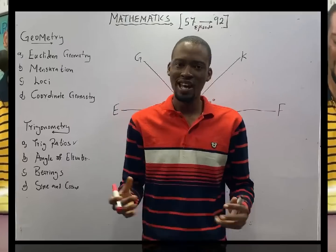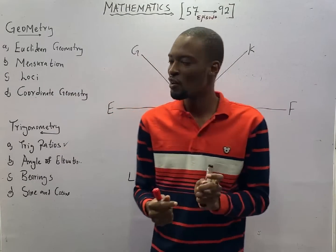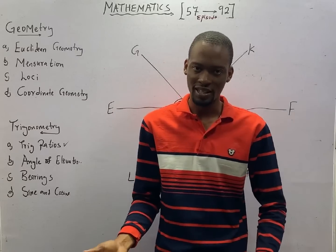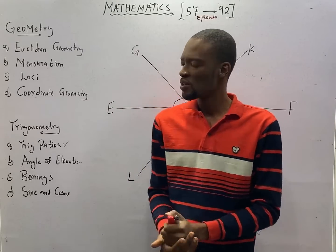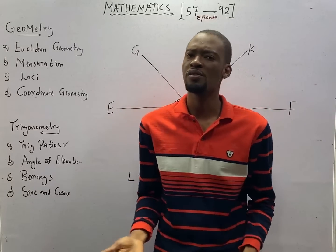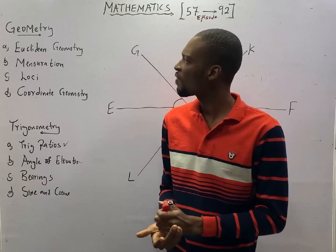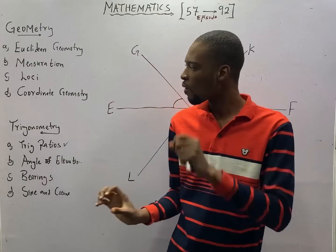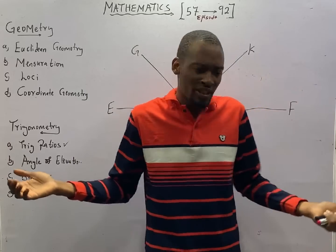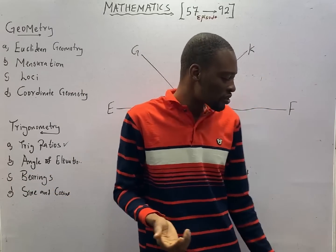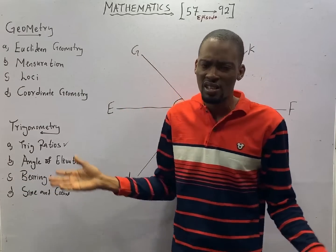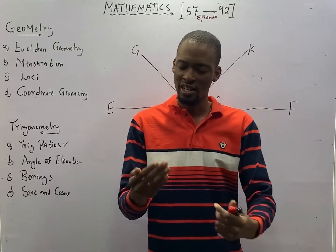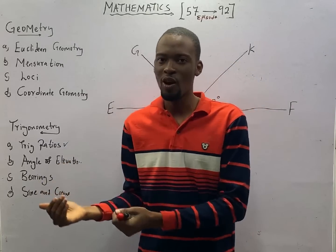This is episode number 61 of the 120 Days to JAMB Mathematics with Flash Isaac. In this episode, we shall be looking at two questions under geometry and trigonometry. I arrange questions randomly and solve them in order.